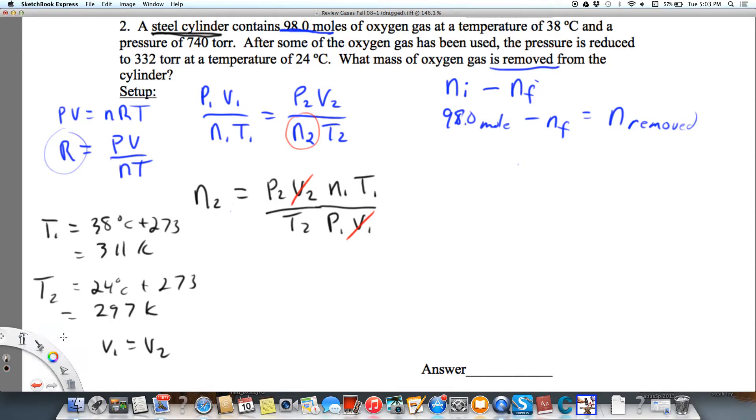And then P1, I'm just going to write this down so I have it right in front of me, is 740 torr. We could change that to atmospheres, but again it would cancel out. And P2 is 332 torr.